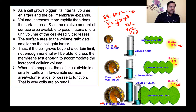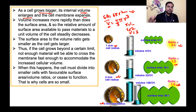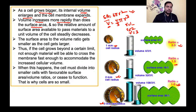As a cell grows bigger, जैसे-जैसे वो बड़ा होता है, उसका internal volume enlarge होता है and the cell membrane expands। लेकिन volume का जो increment होगा, वो more rapidly होगा in comparison to surface area। So the relative amount of surface area available to pass material to a unit volume of the cell steadily decreases।